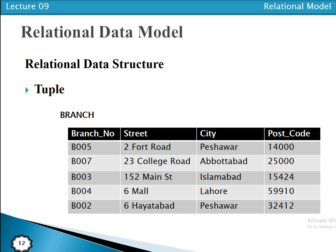Previously we discussed the concept of attribute — a column of a relation that can be in any order and is the intension of the database. Next is the concept of a tuple. A tuple is a row of any relation — for example, one row in the table is one tuple.